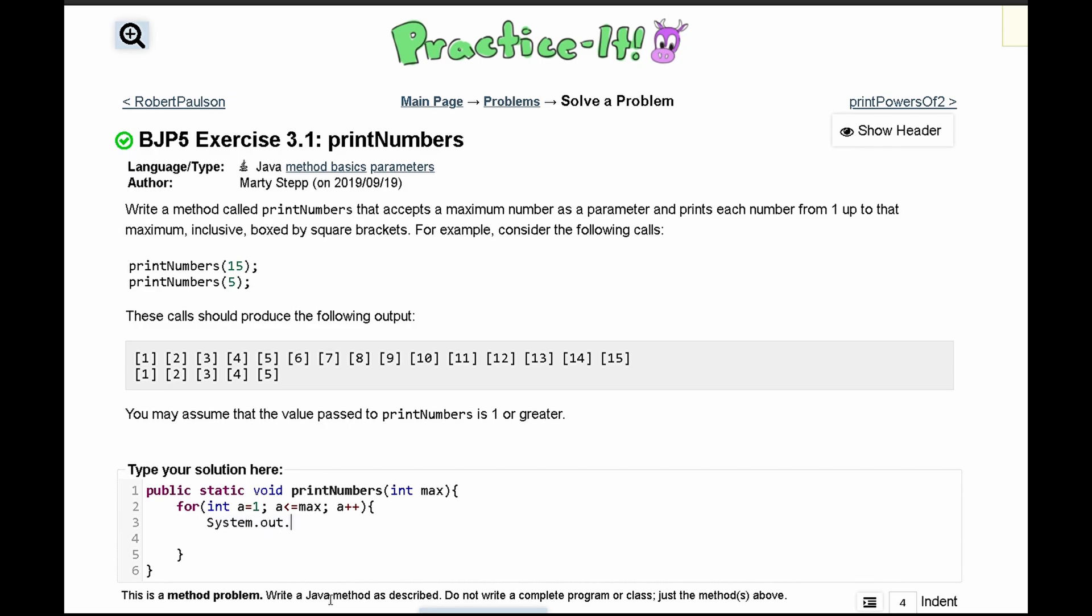In here all we're going to have is a System.out.print, and we will have a bracket like this. Since this is a string, a plus and then a plus and a bracket like this to close it off.